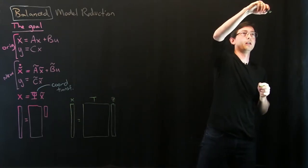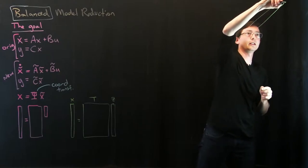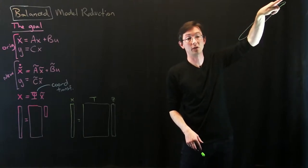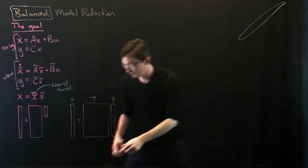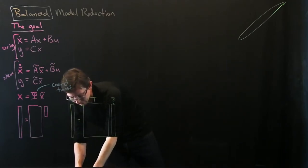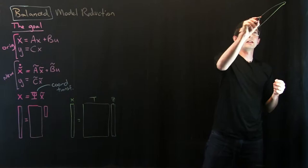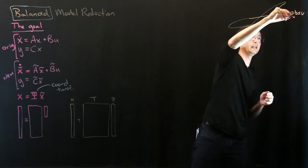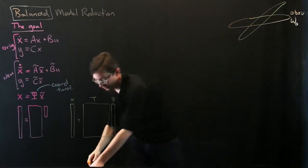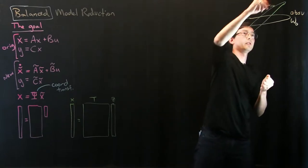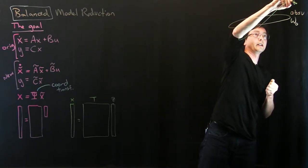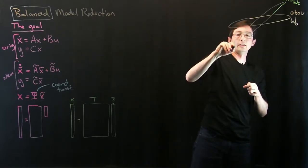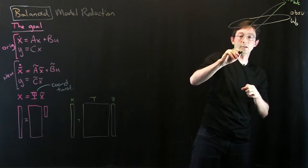So I can basically find a coordinate transformation — and this is a super important picture. Maybe I have a controllability Gramian, drawn as an ellipsoid in state space: this is my most controllable direction, that's my least controllable direction. Maybe I have an observability Gramian pointing in a slightly different direction. This is my W_O Gramian (observable), and this is my W_C controllability Gramian.